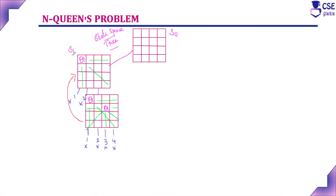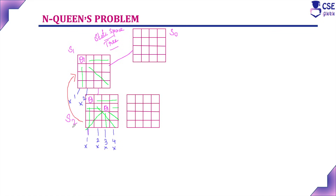We backtrack to the previous state S1, where we had placed the first queen and tried possibilities for the second queen. There were two possibilities: position (2,3) and position (2,4). We have tried (2,3) and it does not lead to a solution. Now we try with position (2,4), and this state is considered S2.